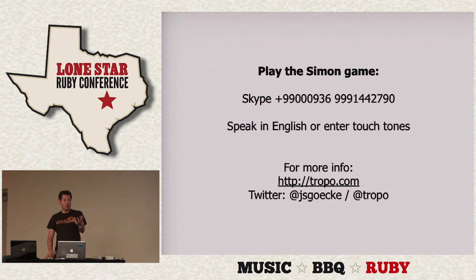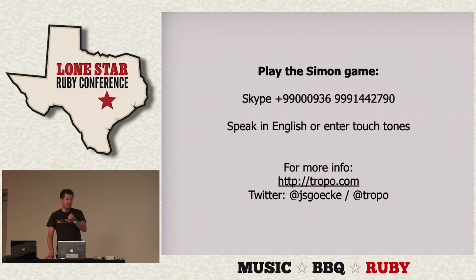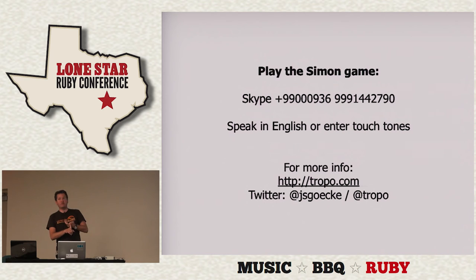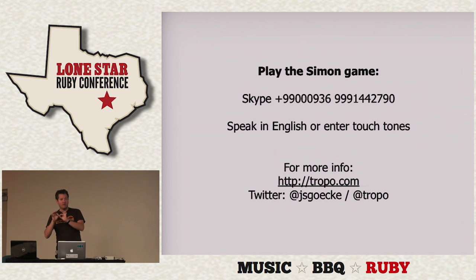You can get open source speech engines — there's Flite for speech synthesis and Sphinx for speech recognition. They do work, but they take tuning to sound good. We also support SSML — the Speech Synthesis Markup Language — which lets you control in detail how fast words are spoken, inflections, and things like that. And GRXML on the voice recognition side.